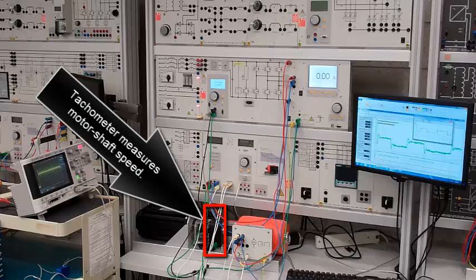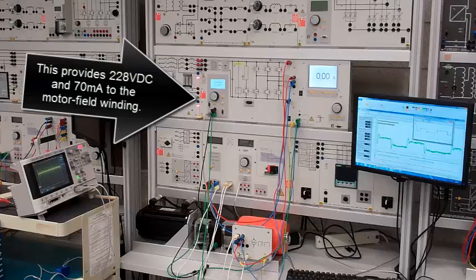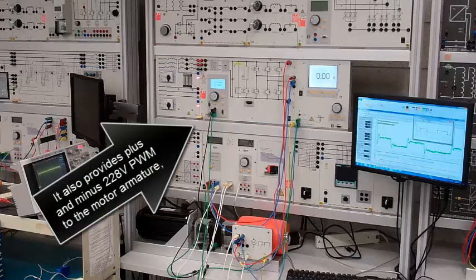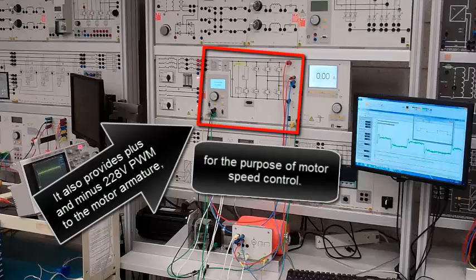Tachometer measures the motor shaft speed. This is the controller for the servo brake. This provides 228 volts DC and 70 milliamps to the motor field winding. It also provides plus and minus 228 volts pulse width modulation to the motor armature for the purpose of motor speed control.